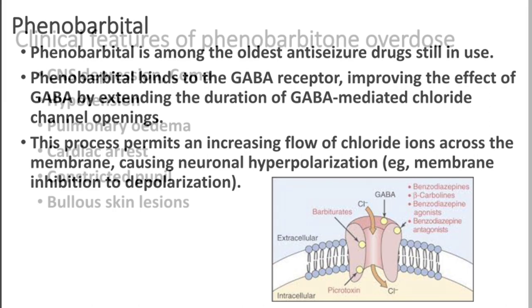When somebody already on phenobarbitone takes additional tablets, their phenobarbitone levels — which are already elevated — can go to overdose. This can produce CNS depression, coma, and hypotension. Some patients may develop pulmonary edema, cardiac arrest, constricted pupils, and severe bullous lesions all over the body. The major clinical features are coma and hypotension.